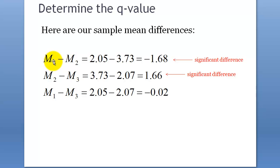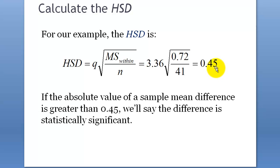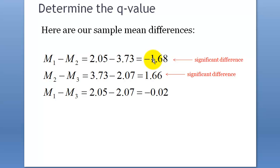For example, the difference between mean one and mean two is 1.68, which is larger than the HSD threshold of 0.45 — so that's the Honestly Significant Difference score of 0.445. Since 1.68 is larger, this difference is significant.